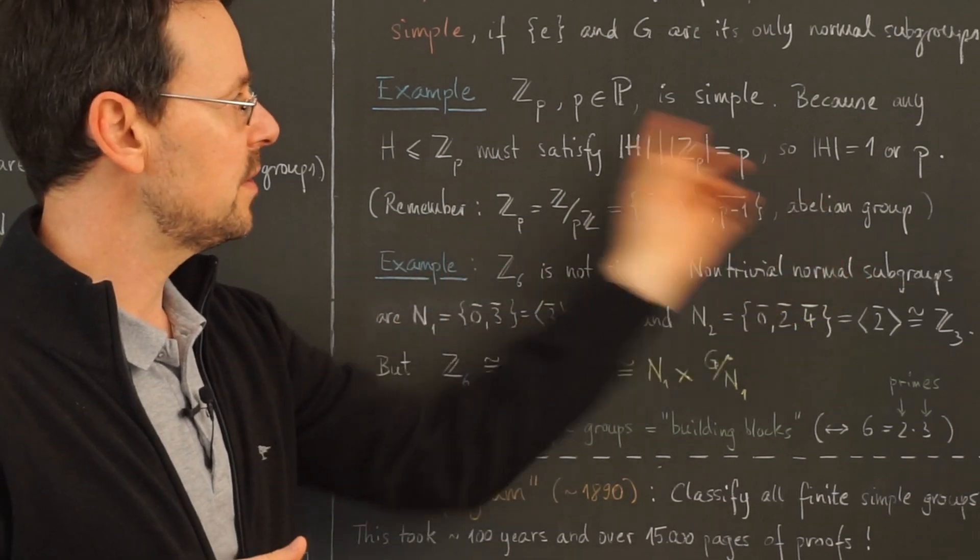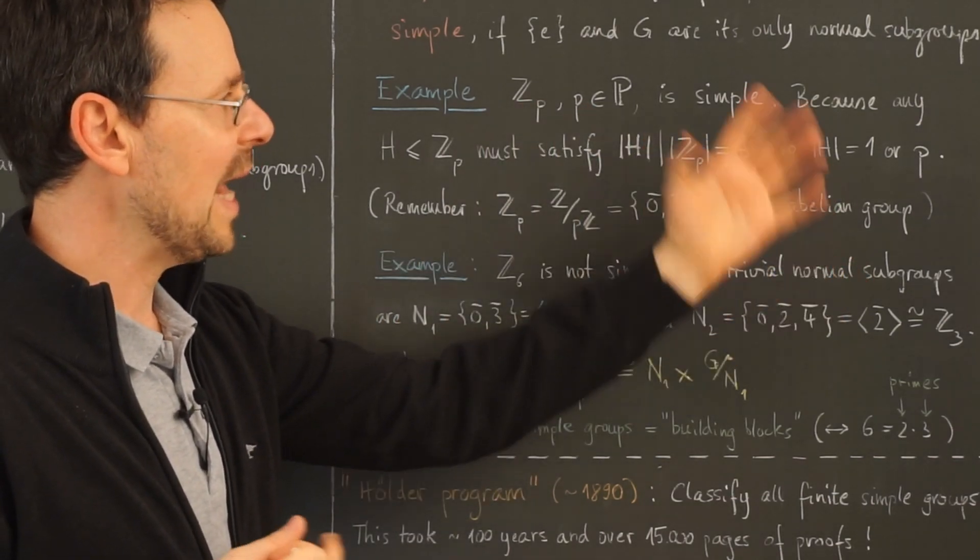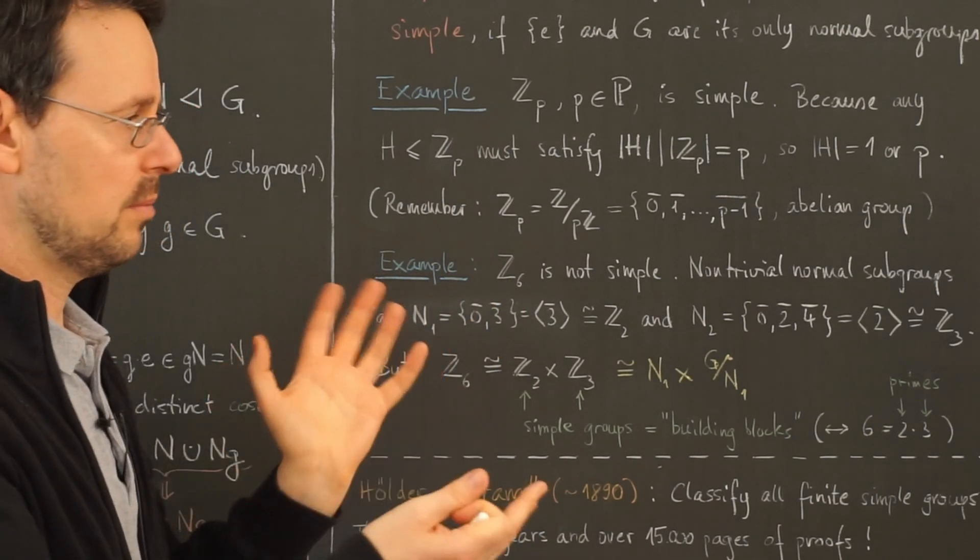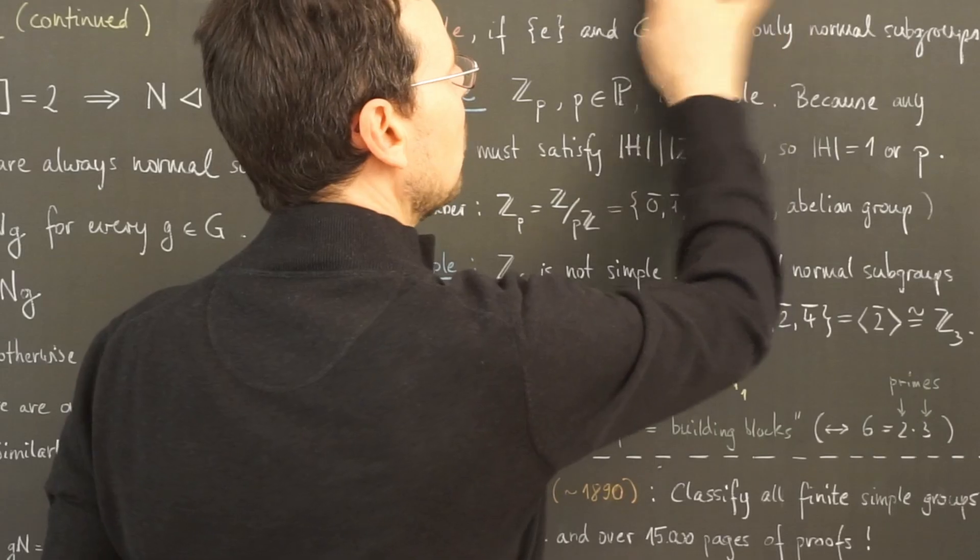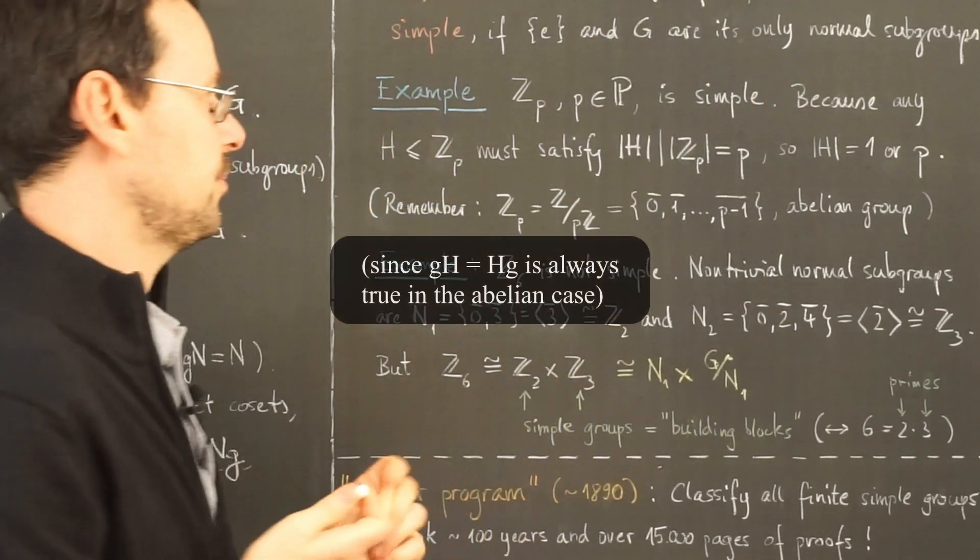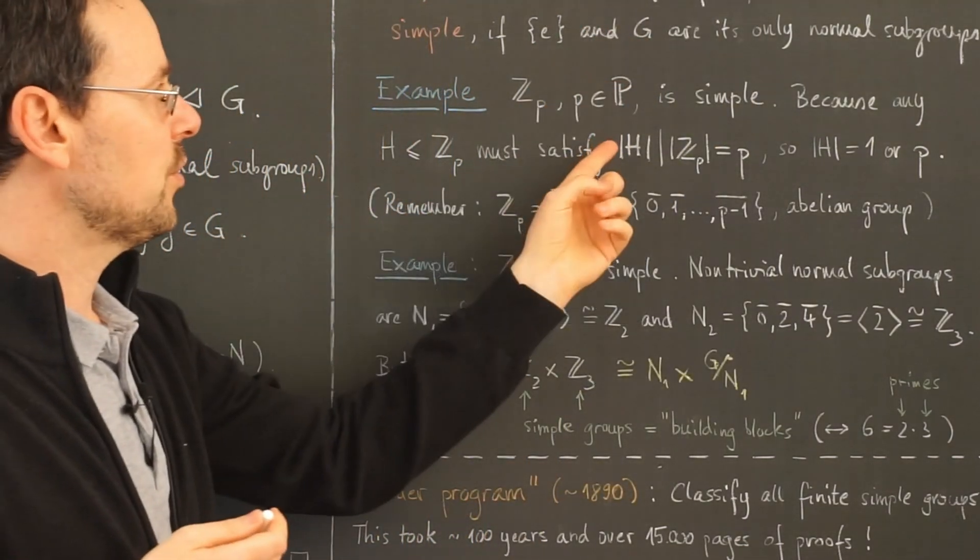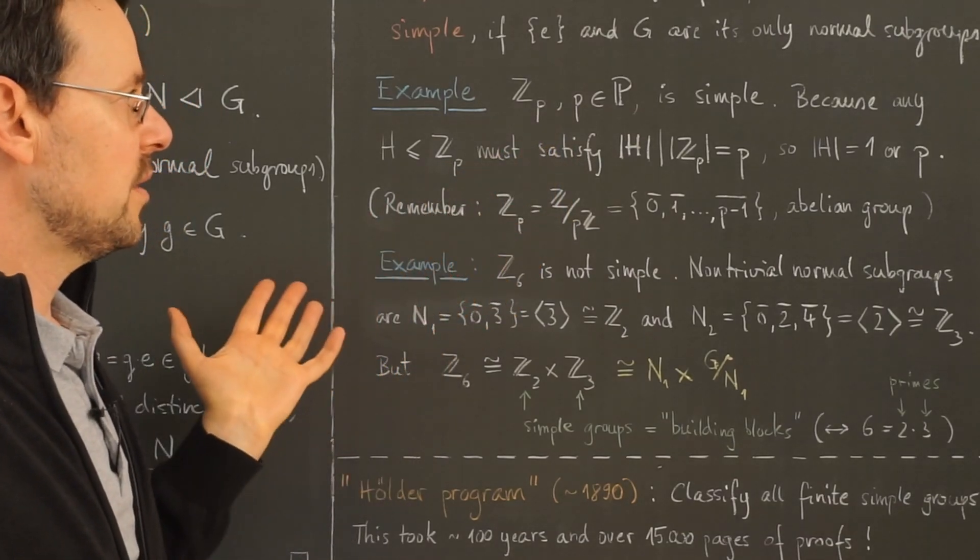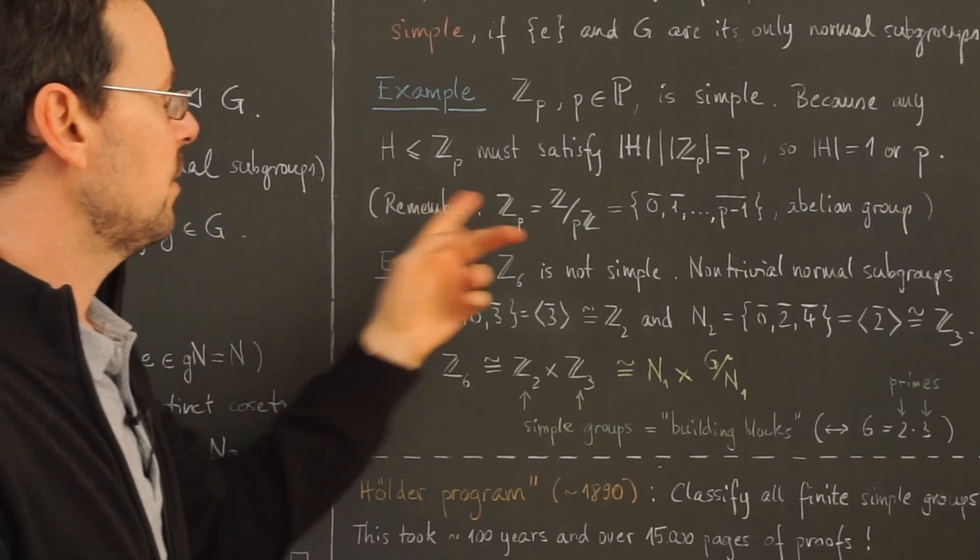First of all, since these groups are abelian, any subgroup would automatically be a normal subgroup. Abelian groups being normal is always fulfilled. So we have to show that there are no non-trivial subgroups at all. But this follows immediately from Lagrange's theorem. Why?